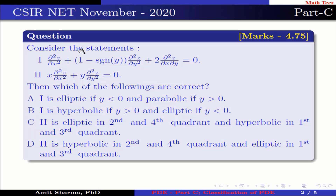The question is: consider these statements. Statement one: ∂²z/∂x² + (1 − signum(y)) · ∂²z/∂y² + 2 · ∂²z/∂x∂y = 0. Statement two: x · ∂²z/∂x² + y · ∂²z/∂y² = 0.